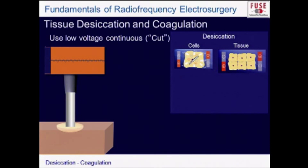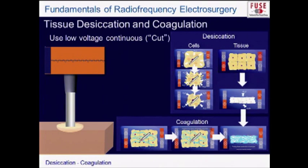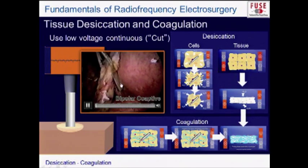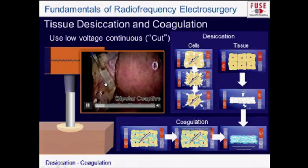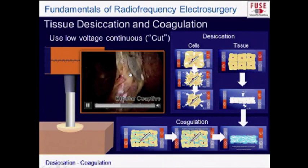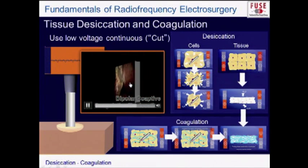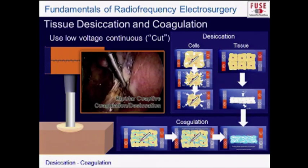Looking at desiccation in detail: cells shrink, tissue shrinks. Coagulation involves the unwinding and rewinding of proteins — we're not destroying the protein as in vaporization; we're maintaining it and using it to create a seal. However, with older paddle-based devices, significant energy escapes around the sides of the ridge, causing thermal spread to areas where you don't want it.